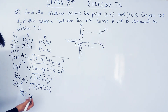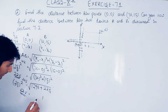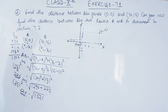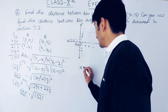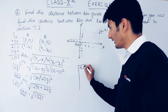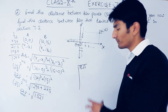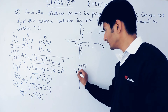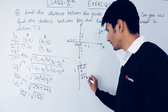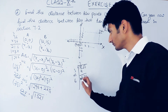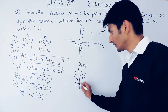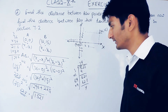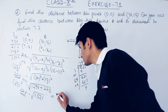Now we add: 1296 plus 225 equals 1521. So we need the square root of 1521. Using the division method, the square root works out to 39. So the distance between these two points is 39 units.